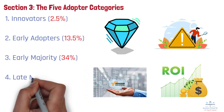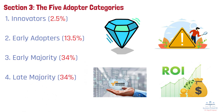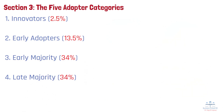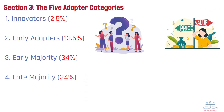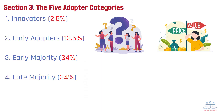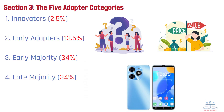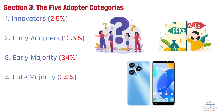Group 4: Late Majority, 34%. The late majority is more skeptical and typically adopts due to social pressure or necessity. They require strong assurances, easy usability, and often lower costs. For example, people who resisted smartphones until budget-friendly models and simple interfaces — like Android One — became available fall into this group.